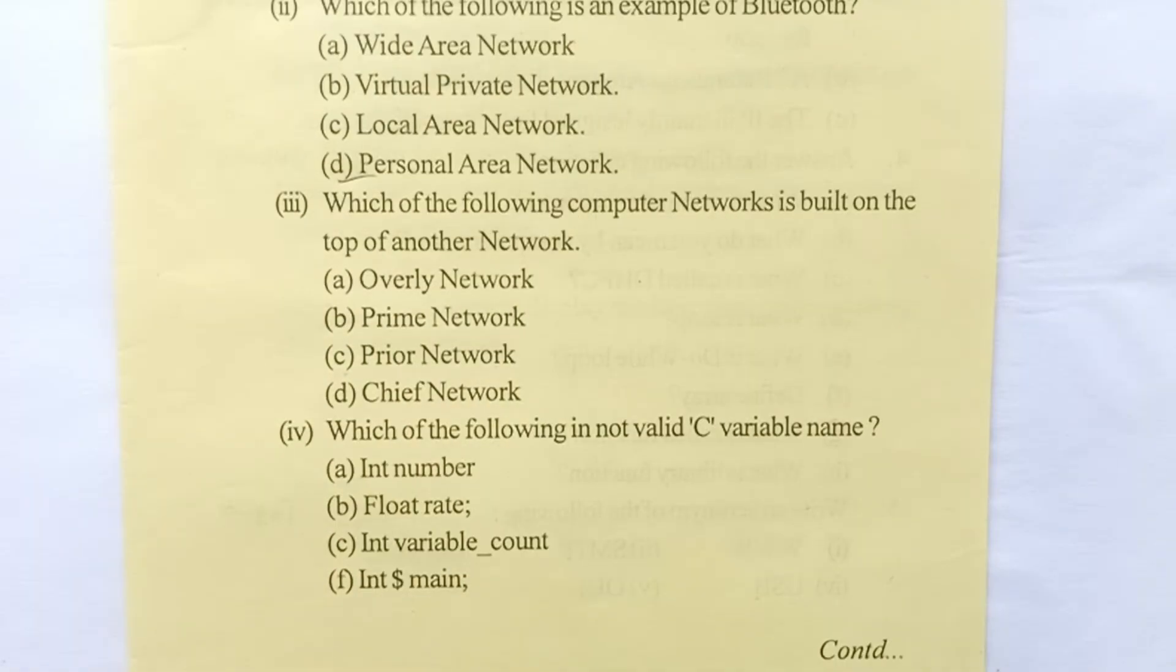Question number three: which of the following computer networks is built on the top of another network? The correct answer will be option A. Question number four: which of the following is not a valid C variable name? The correct answer will be option D.